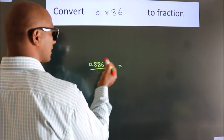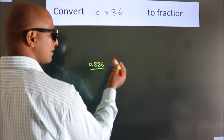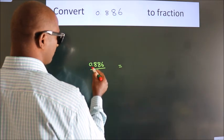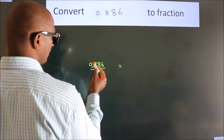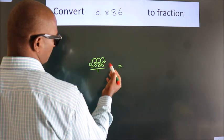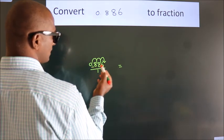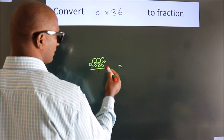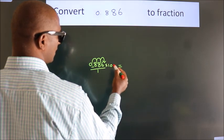To convert this to fraction, for that we have to move this decimal after 1, 2, 3 numbers. To move this decimal after 3 numbers, for that we have to multiply it with 1000.